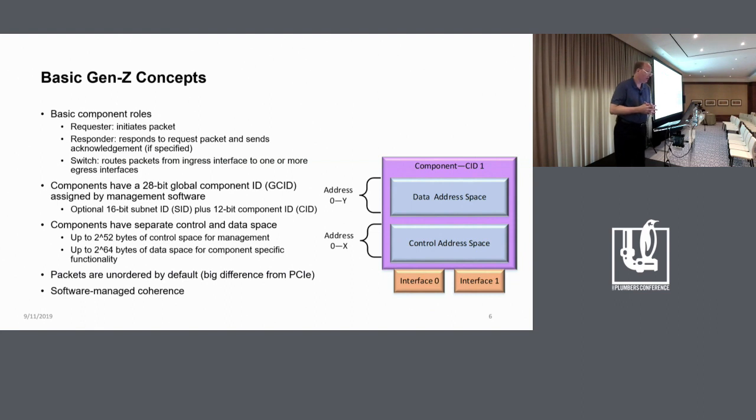We're going to drop down one little level of detail lower now and get you some very basic Gen Z concepts. So there are three basic component roles. Requesters are the things that initiate packets in order to get service from some other entity out on the fabric, which is known as a responder, which executes that packet and then sends back an acknowledgement if it needs to. That acknowledgement happens both for reads and writes, so even writes are acknowledged. This is basically a reliable protocol.